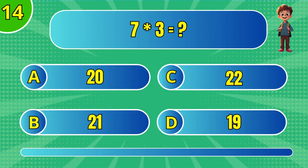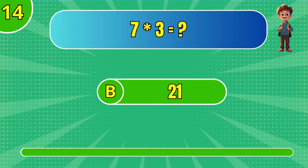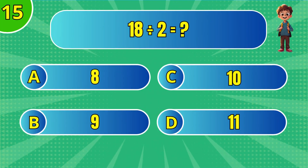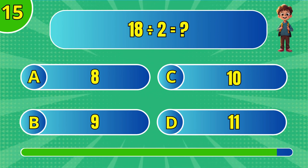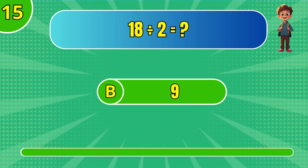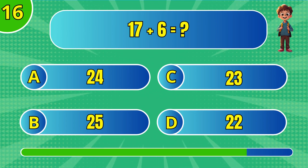What is 7 multiplied by 3? A: 21. What is 18 divided by 2? A: 9. What is 19 plus 6? A: 23.